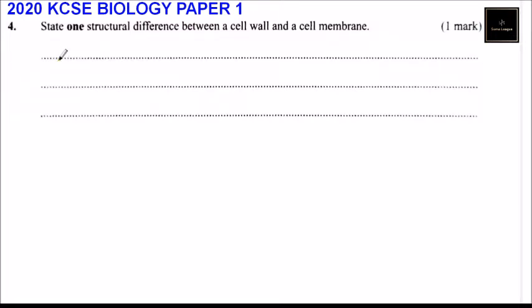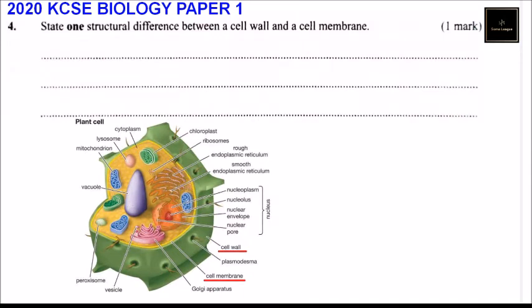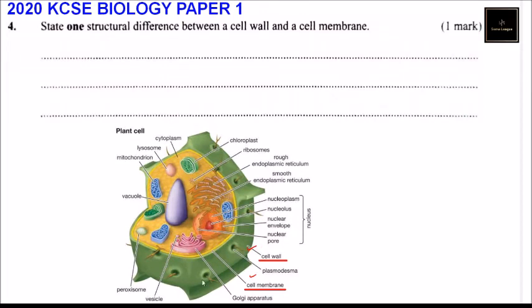We can have a figure here to show us the two. Here is a cell wall and here is a cell membrane. You can see the cell wall is the green part and the yellowish one is the cell membrane. Don't concentrate on the other parts — I just need you to know about the cell wall and cell membrane.